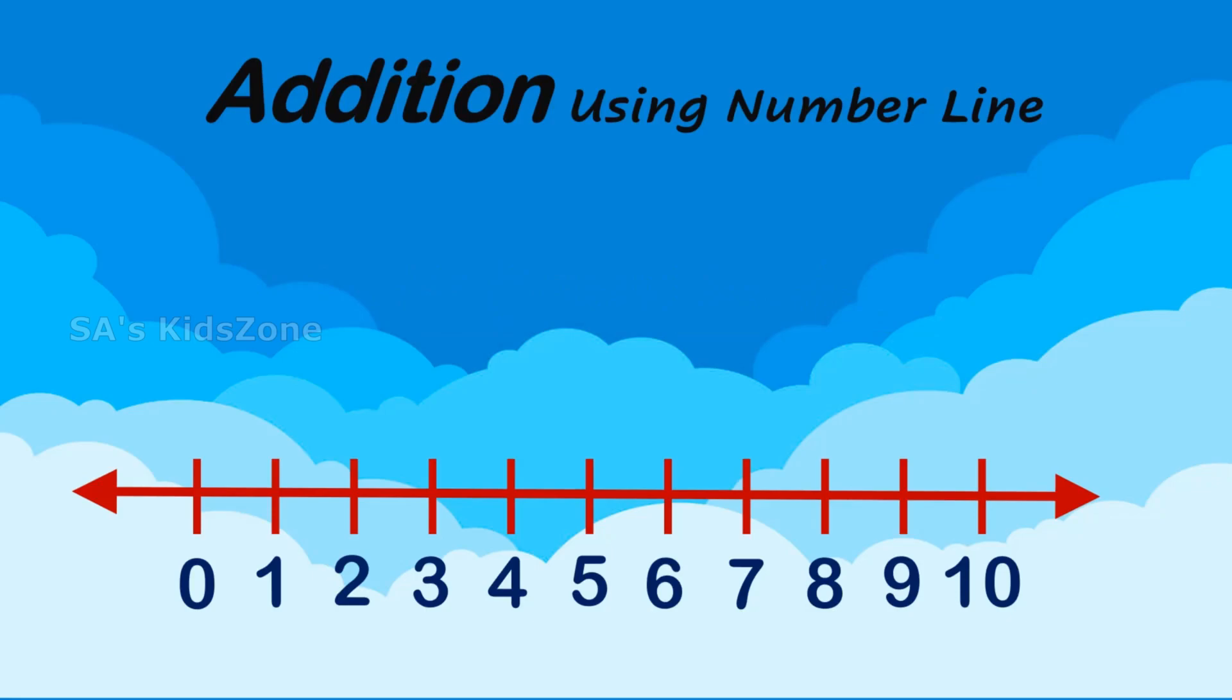To find the sum of 2 and 3 by using the number line, we will start at 2 and jump 3 numbers towards right side. Now,